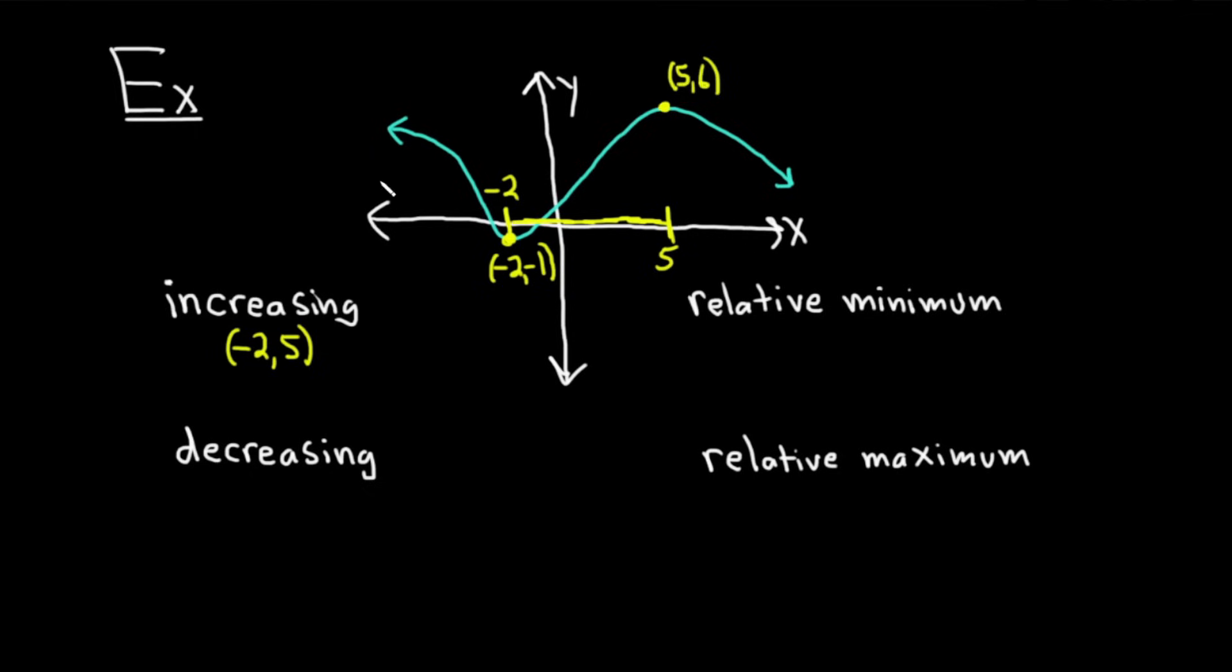How about decreasing? Again, you want to look at it from a left to right perspective. The y values are getting smaller all the way until you get to negative 2. So from negative infinity to negative 2, the function is decreasing. And then at negative 2, it starts to increase again, stops increasing at 5. And then at 5, it starts getting small again. So that would be 5 to infinity. From 5 to infinity, the y values are getting smaller. Remember, your answers are always x values, and you always want to use parentheses.